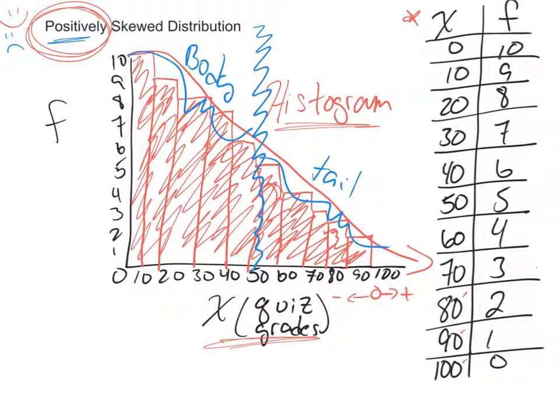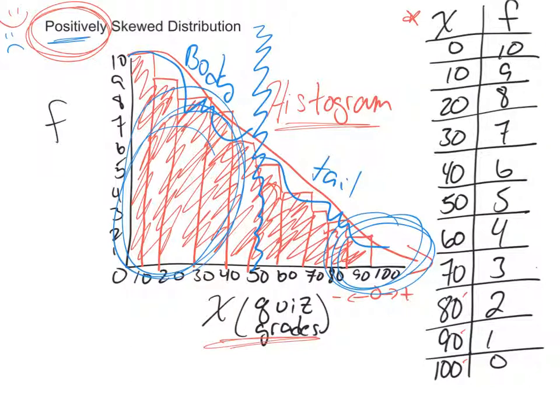We only had very few people score in the A or B range and the bulk of the people scored in the failing range. So while this is a positively skewed distribution, it would be considered a bad or a hard test.